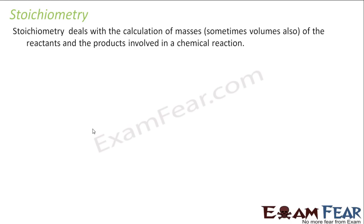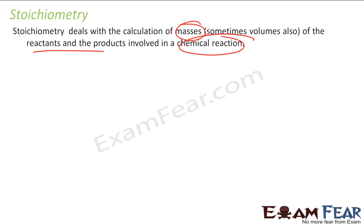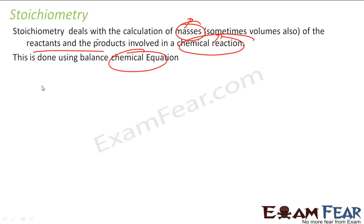Today also we can use stoichiometry, but we don't. This is a very critical process where you deal with calculation of masses, and sometimes volumes also, of the reactants and products involved in a chemical reaction. This is done using a balanced chemical reaction, so you should know what a chemical reaction is and what a balanced chemical reaction is.